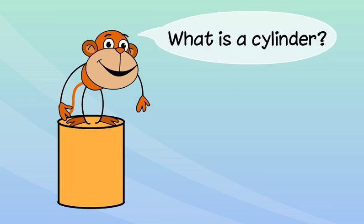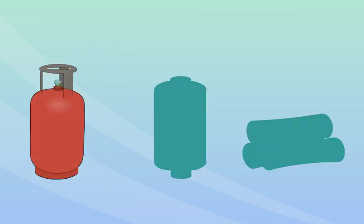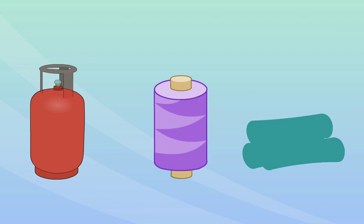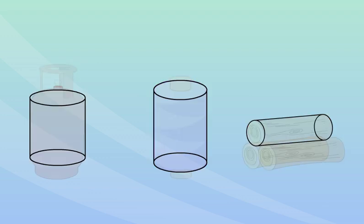What is a cylinder? Objects such as a gas cylinder, a thread reel and a log of wood are in the shape of a cylinder.